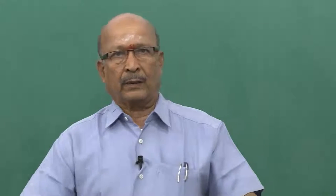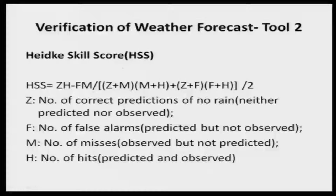The agro-advisory is being prepared by the agricultural specialist. They must know whether they are preparing it based on a precise or better weather forecast — for that, this tool can be employed. Another tool is the HHSS score, a skill score. This is tool number 2.